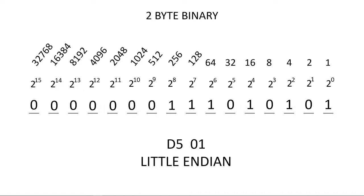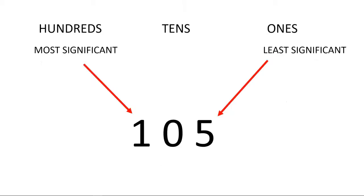Confused yet? Well, let's make it a little bit simpler by relating this to decimal. In decimal 105, we know that the hundred's position on the left is the most significant or biggest number. Big Endian. The five is in the ones position, so it is least significant. Little Endian.